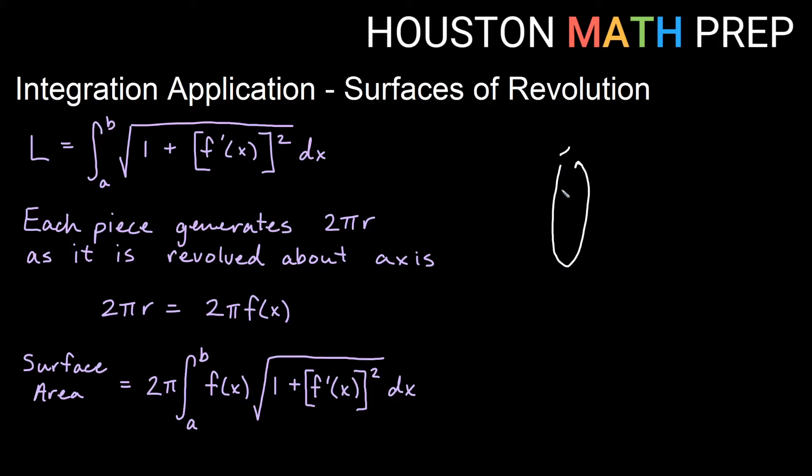And so remember the formula for a circumference is going to be 2π times the radius. And if you think about an axis running through the middle of this, then the radius is actually going to be the distance from the axis to the function itself. In other words, the radius is just the function value. So we can think of 2πr as we revolve about the axis as actually 2π times the function itself.